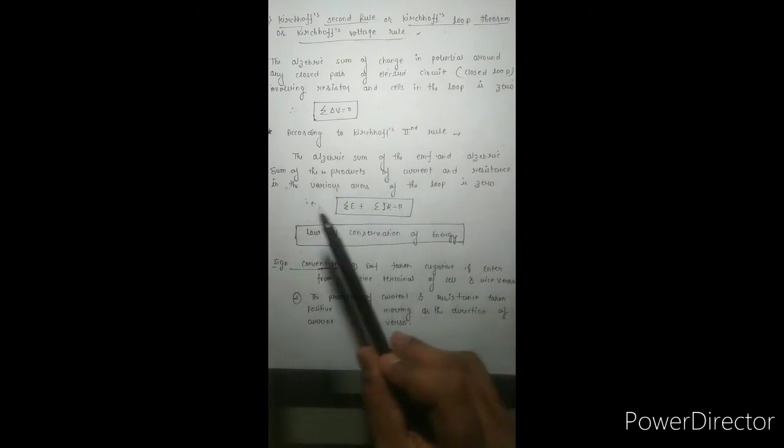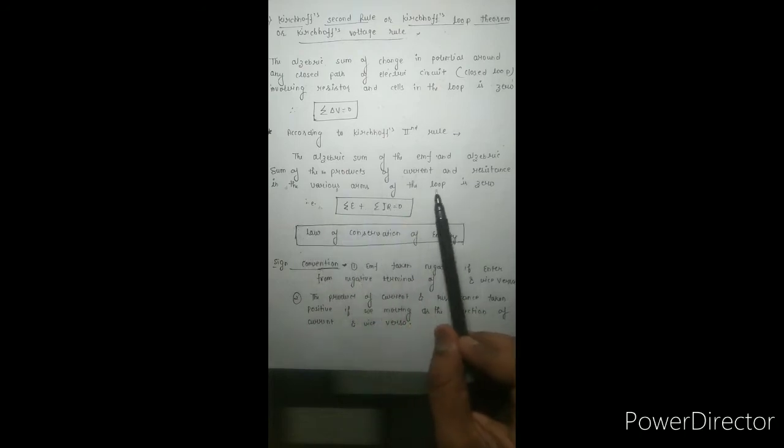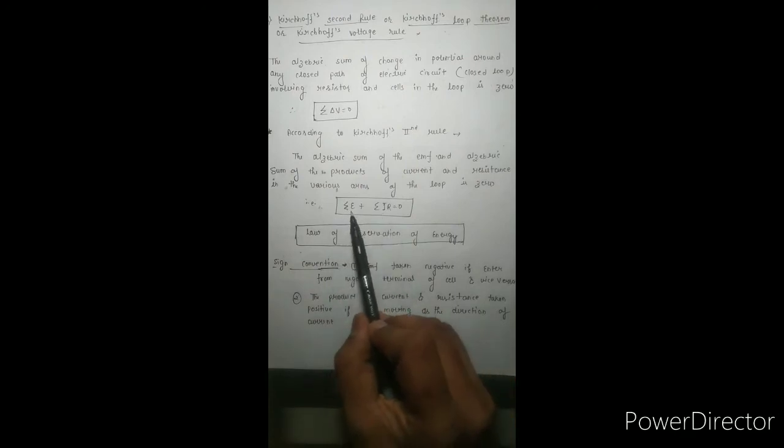The second rule is called the loop theorem, or the voltage rule. The algebraic sum of changes in potential drop around any closed path or closed loop involving resistors and cells is zero. This is most important because it is the rule we typically use in numerical problems. The total potential drop is zero, and we can also say that the algebraic sum of EMF and the algebraic sum of products of current and resistance in the various arms of the loop is zero.